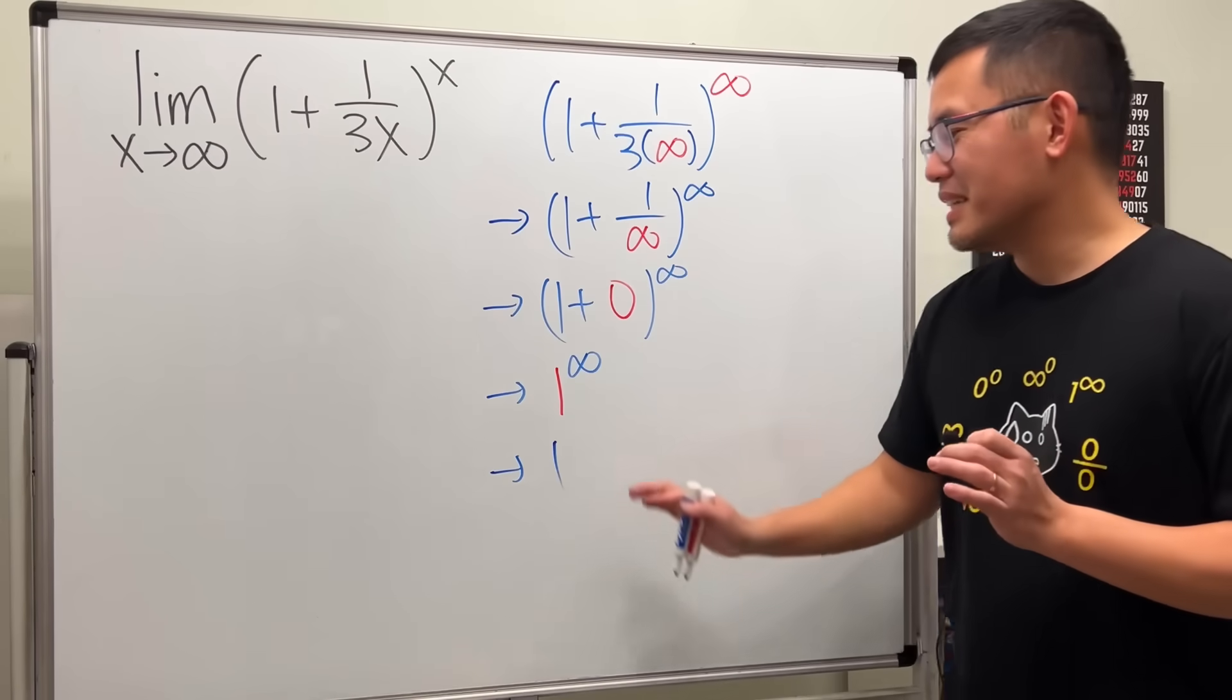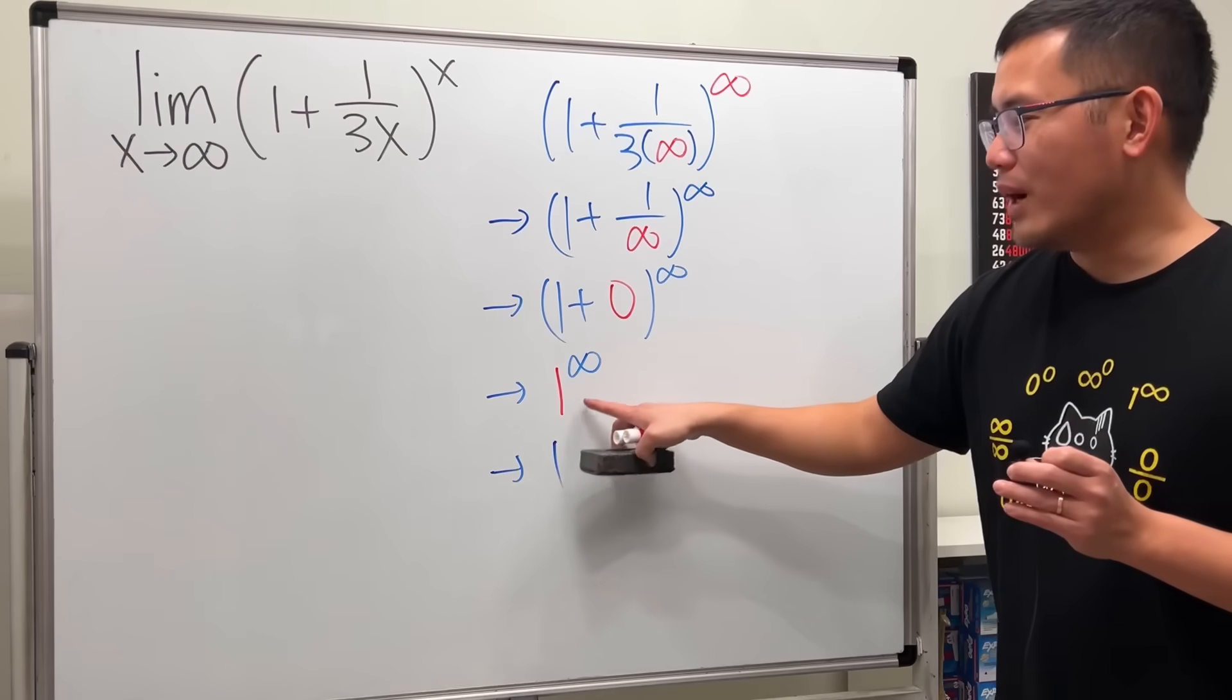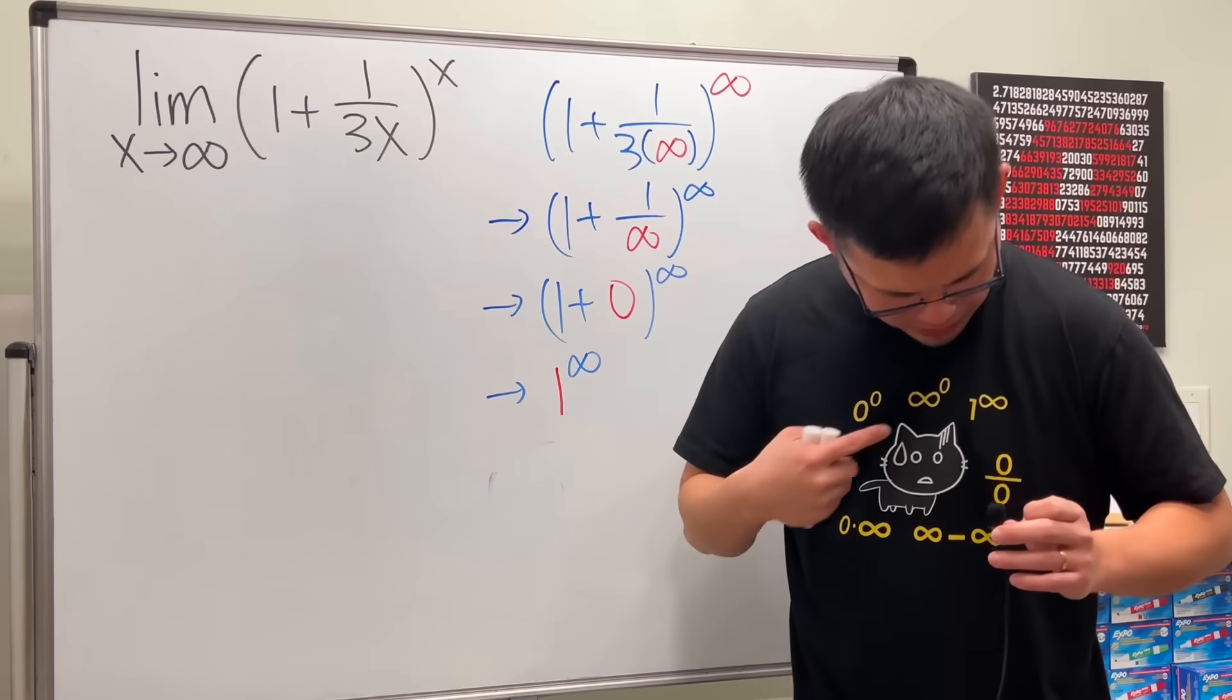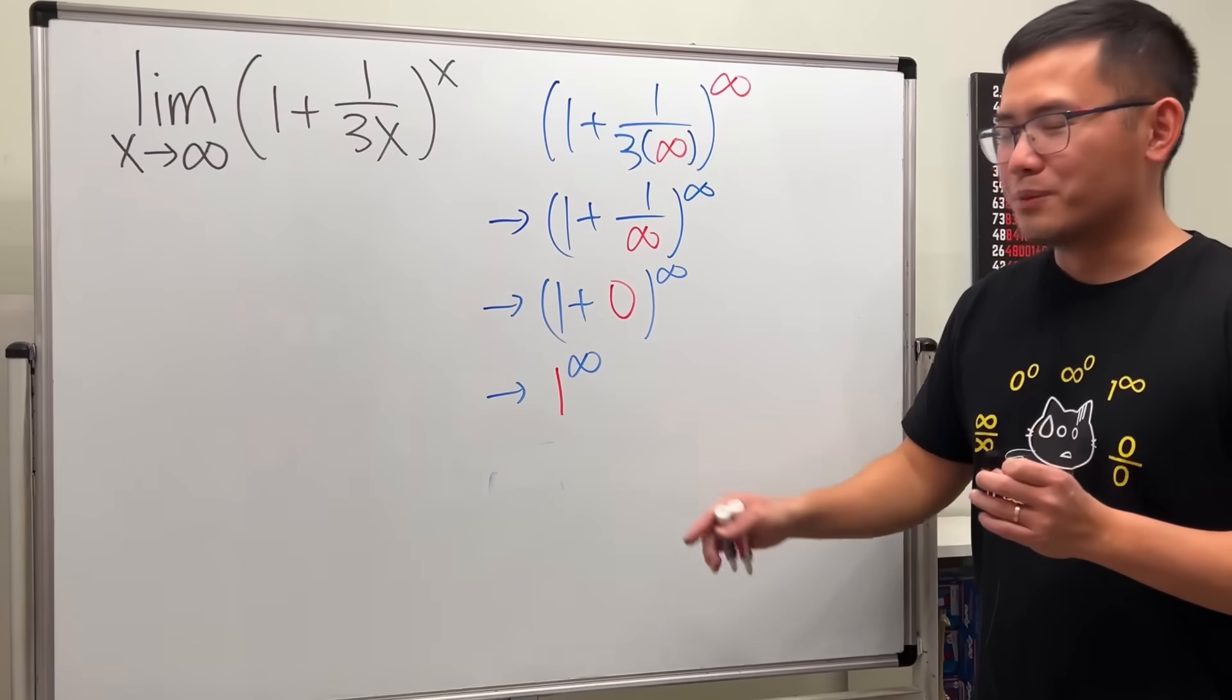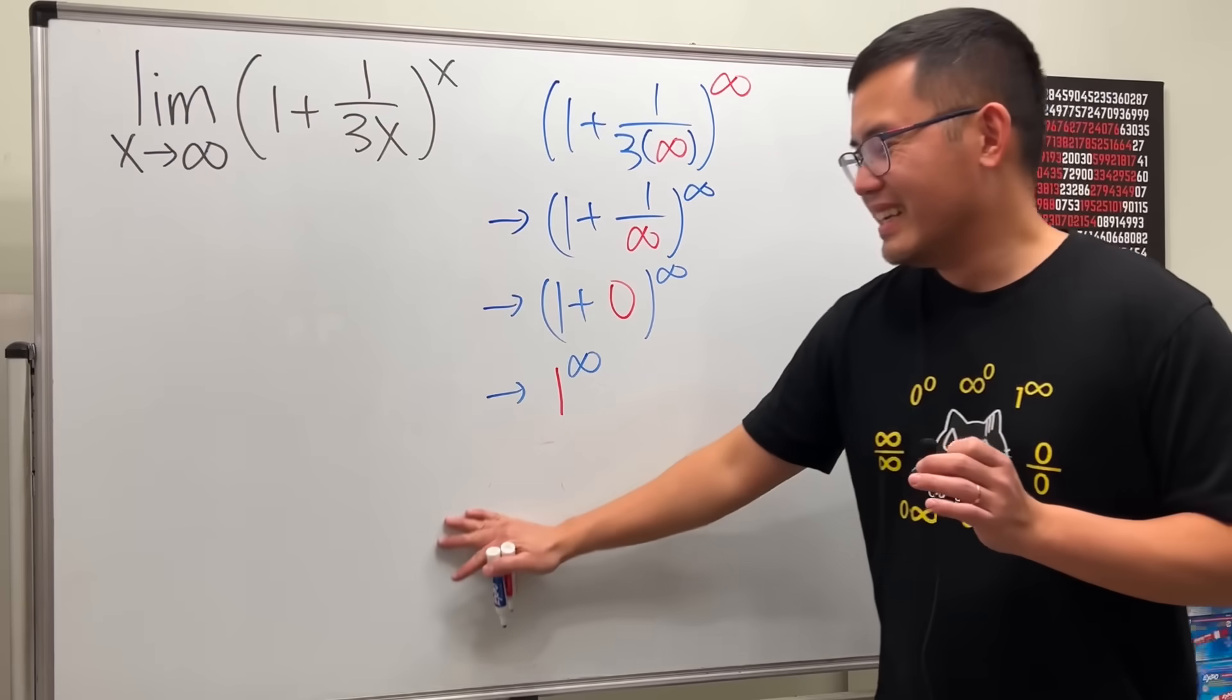Well, not too fast. In fact, we cannot say anything when we encounter 1 to the infinity's power. Because it's on my shirt somewhere here. This is one of the indeterminate forms. So we cannot draw any conclusion yet.